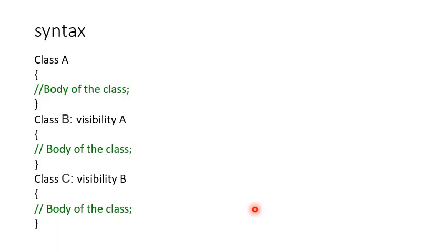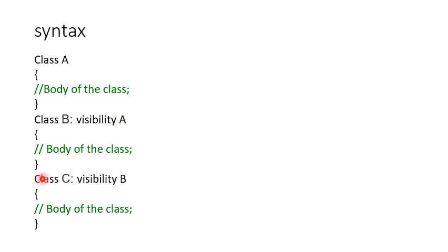The syntax of multi-level inheritance: class A is the base class. Then class B is also a base class, but it is inherited from A with a visibility mode, and has its own body. Then class C is inherited from B. This is the multi-level inheritance syntax.